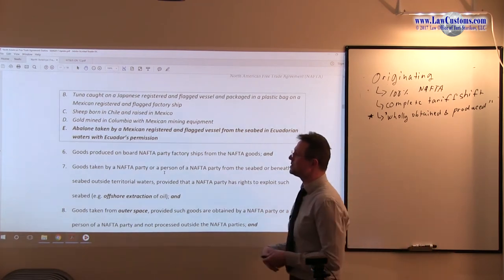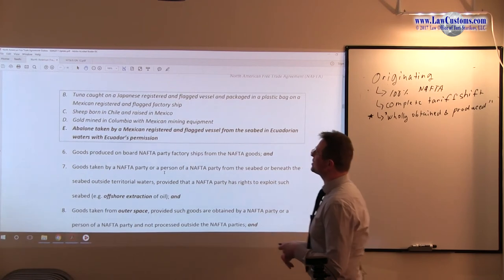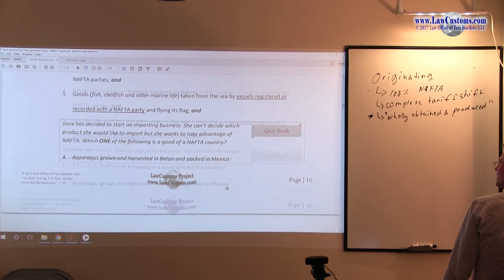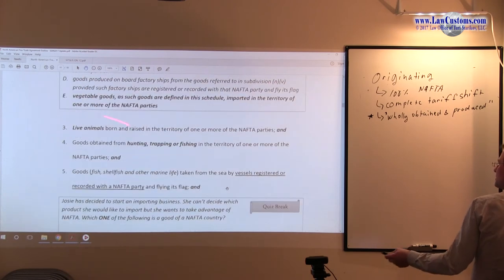Then you have a sheep in answer choice C, which is born in Chile and raised in Mexico. So sheep is livestock. And with respect to live animals, it must be a live animal born and raised in the territory of NAFTA party.